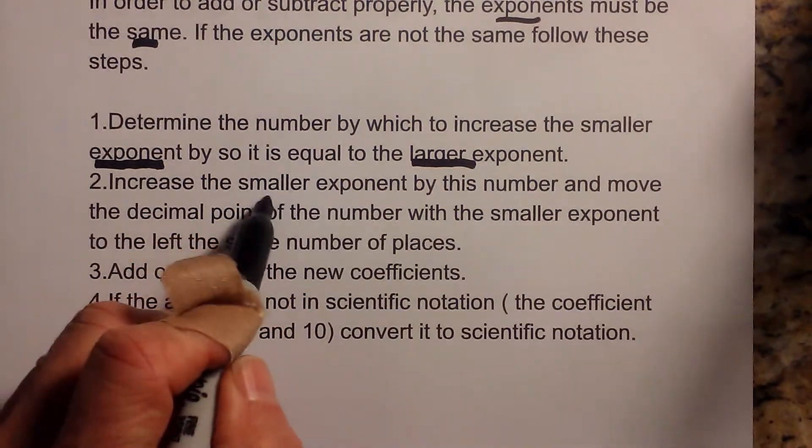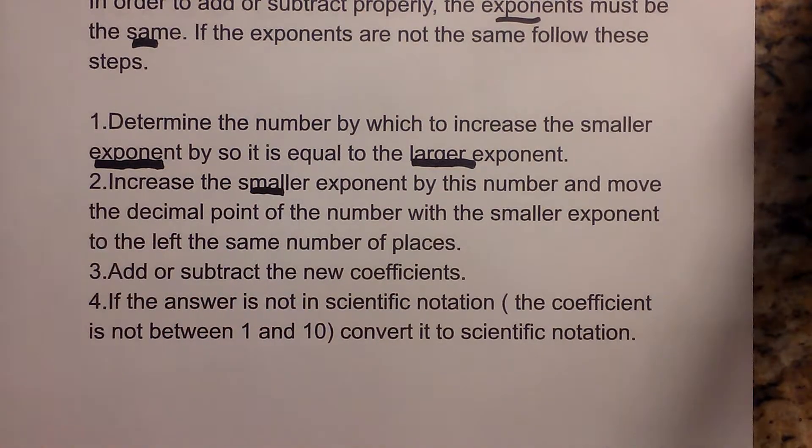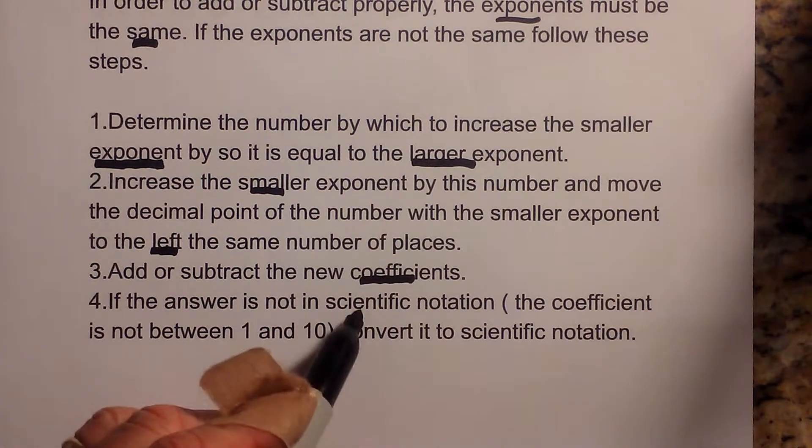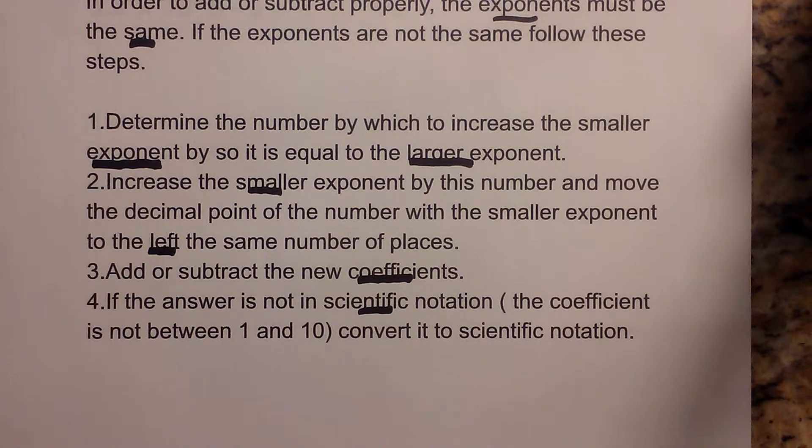In order to increase the smaller exponent by this number, move the decimal point of the number with the smaller exponent to the left. Then you add and subtract the coefficients. And if it's not in scientific notation, then you need to convert it.